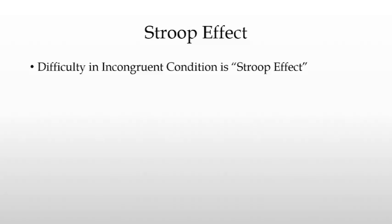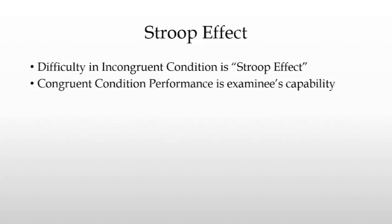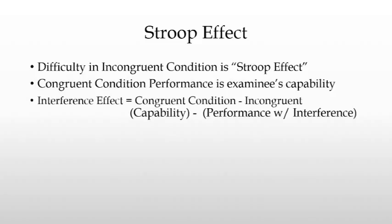That difficulty a person experiences in the incongruent condition is due to a strain placed on a person's resources by the competing stimuli. We want to compare that difficulty to what a person is actually capable of, which we measure when we measure their performance in the congruent condition — how many words and how many colors they were able to say. We're then able to obtain an objective measure of the interference by subtracting their performance in the incongruent condition, when the colors and words are mixed, from their performance in the congruent condition.